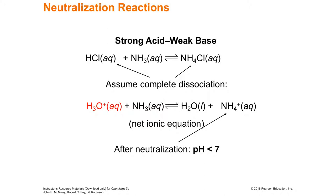The same thing would happen if you had a weak base and a strong acid. The weak base doesn't completely break apart — most of it is going to stay together. Here is your base: ammonia. It's going to take the hydrogen to itself and become ammonium, NH4⁺, with a little bit of chloride. Since ammonium is a weak acid, it's going to drop the pH below 7. When you have the conjugate acid of a weak base, you end up with a weak acid that drops the pH below 7. So: strong acid + weak base drops the pH; weak acid + strong base raises the pH.